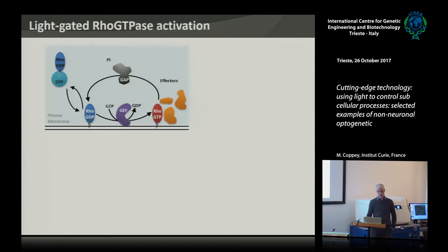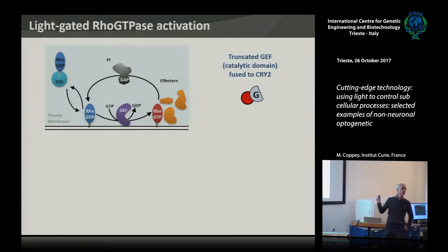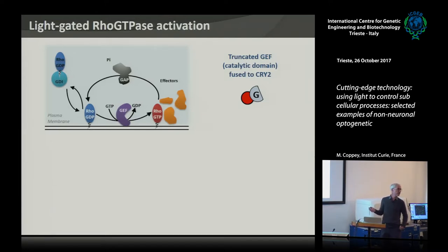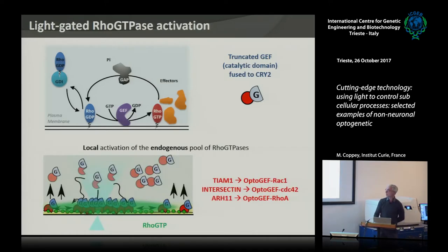How to control this optogenetically? You always need a little trick to go from a dimerization system to something controlling signaling. In this case the idea is to take a GEF — a multi-domain protein where one domain is the catalytic one — and this catalytic domain must be on the plasma membrane to be active. If it's in the cytosol, concentration is too low and nothing happens. So the trick is to truncate this GEF, keep only the catalytic domain, fuse it to the dimerization system, so that when you shine light you recruit it to the plasma membrane and activate the endogenous pool of GTPases.